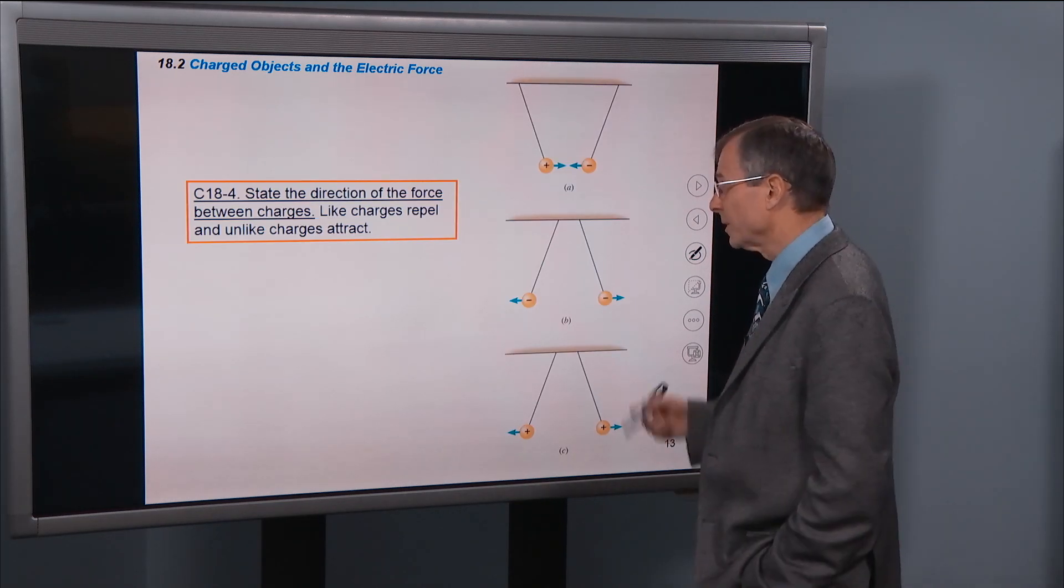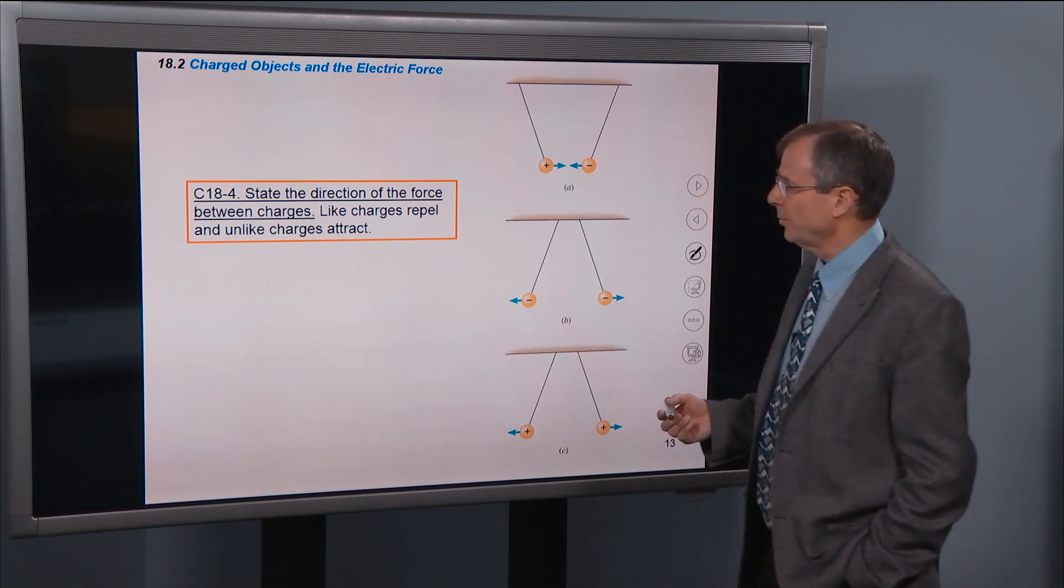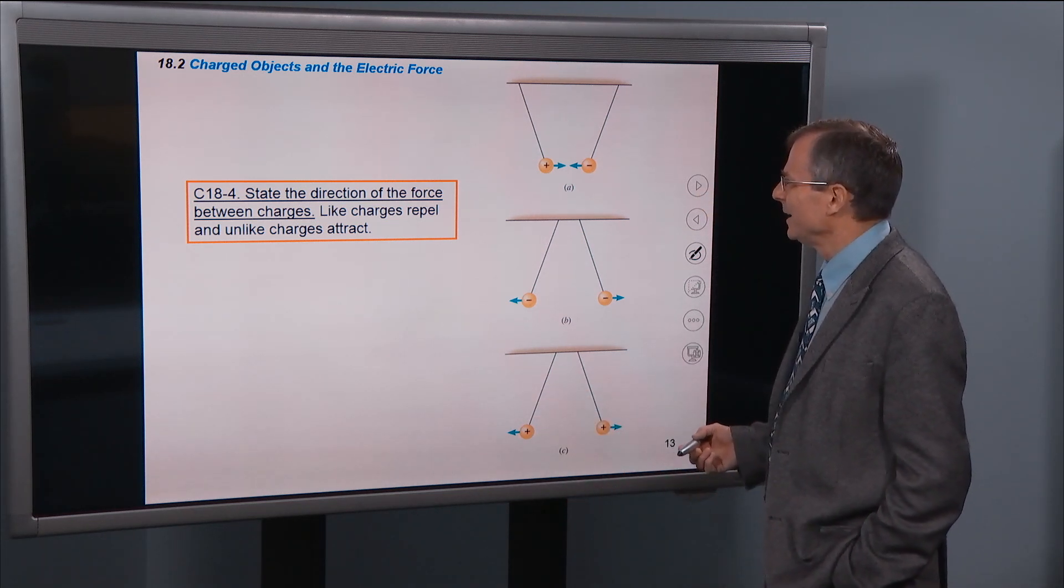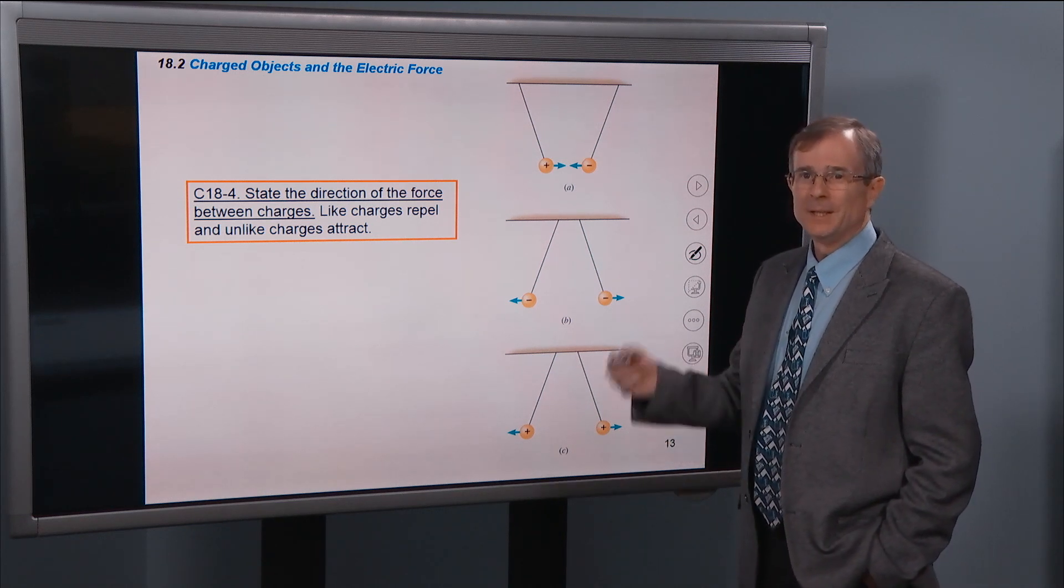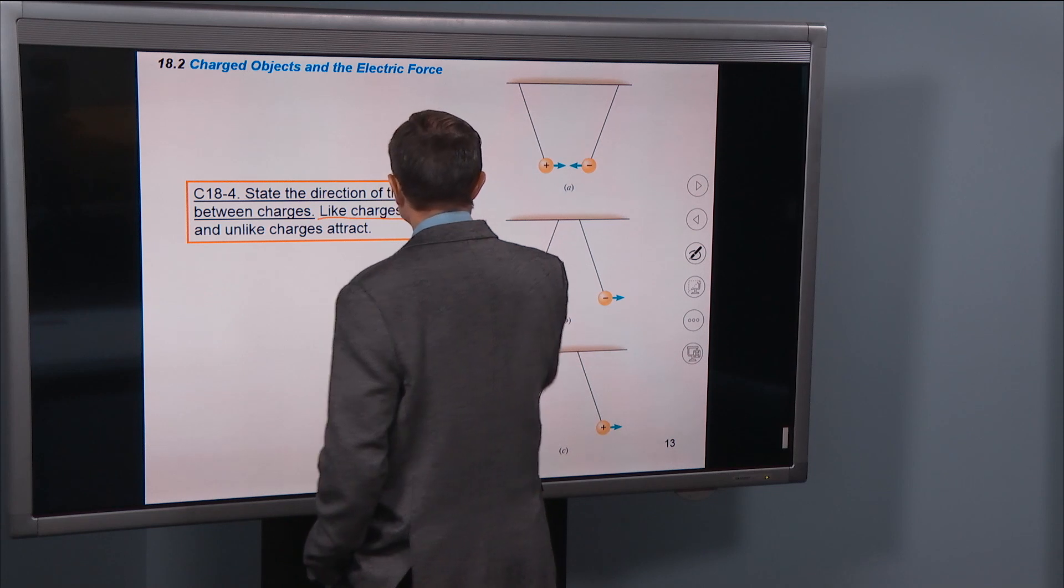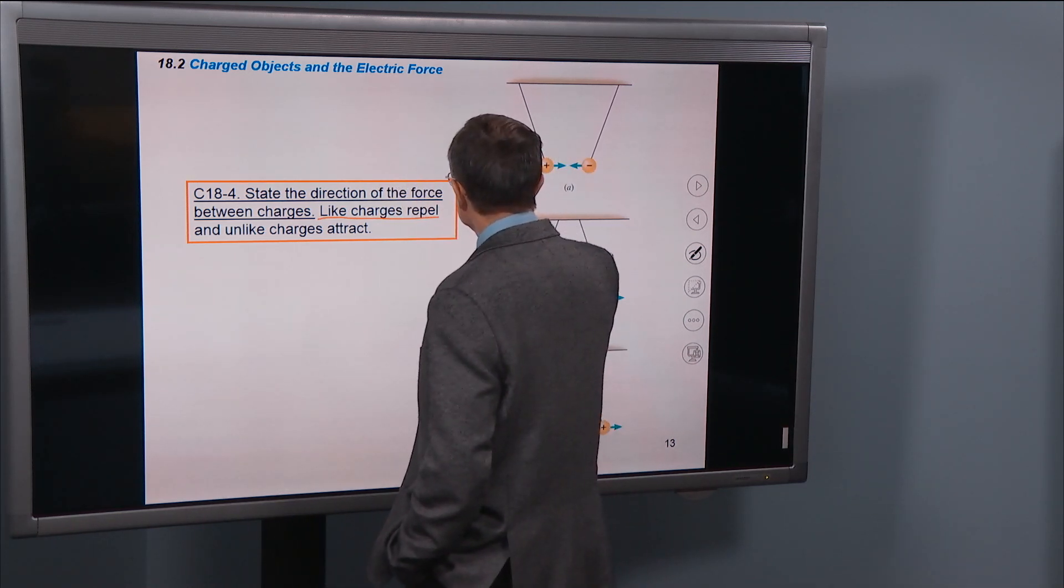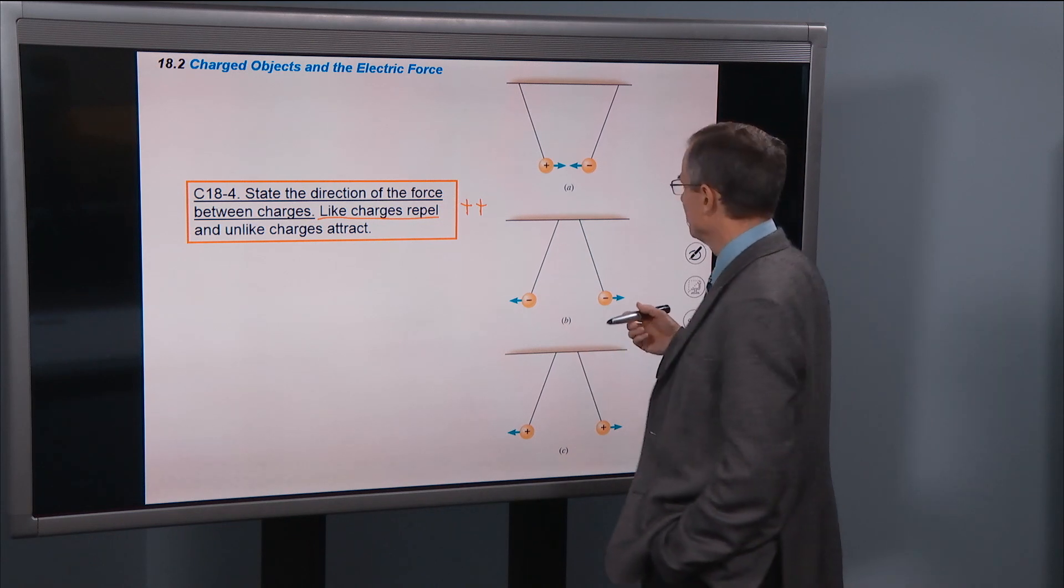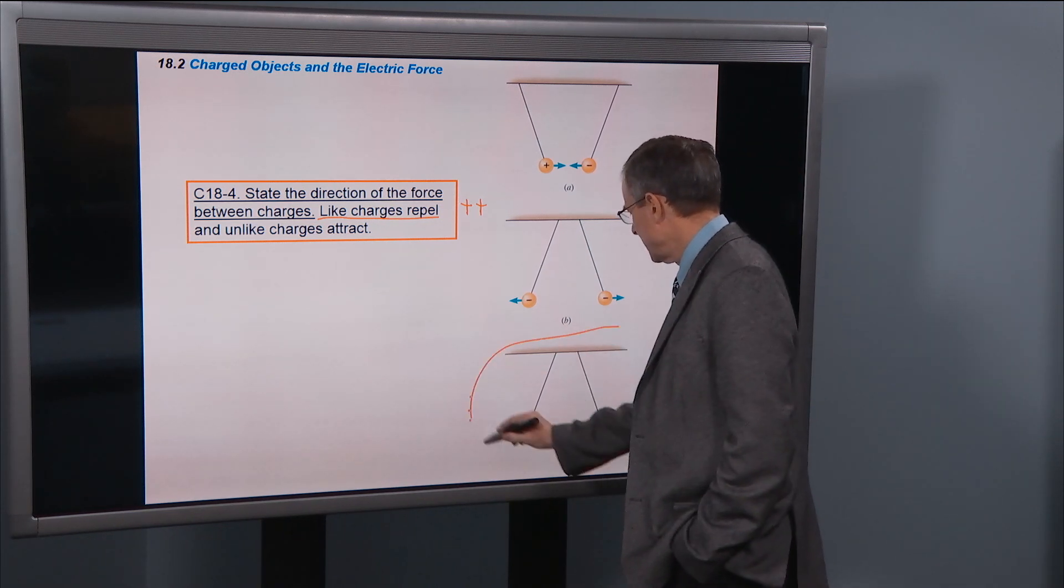And the second, fourth concept in this chapter is state the direction of the force between charges. You might have learned this in the third grade. And like charges repel, unlike charges attract. So you have two positive charges. That's what we call as like charges. So that would be this case here.